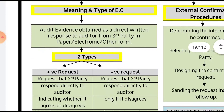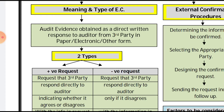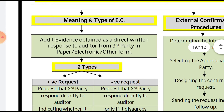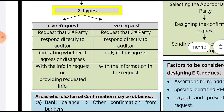Starting with the meaning of external confirmation: external confirmation is audit evidence obtained as a direct response to the auditor from a third party. It is received directly by the auditor from the third party, in paper, electronic, or other forms.